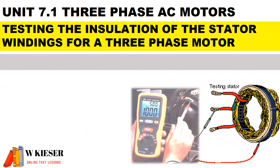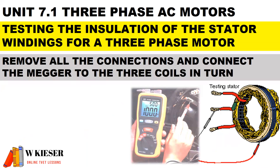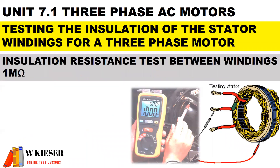In this final section, how do we go about testing the installation of the stator windings for a three-phase motor? We use an insulation resistance tester, also known as a MEGA. We usually set it to about 500 volts DC and then hit the test button. First, we remove all the connections and connect the MEGA to the three coils in turn. For an insulation resistance test between windings, we should get a good reading of one mega ohm. For an insulation resistance test to earth, it also requires a reading of at least one mega ohm.